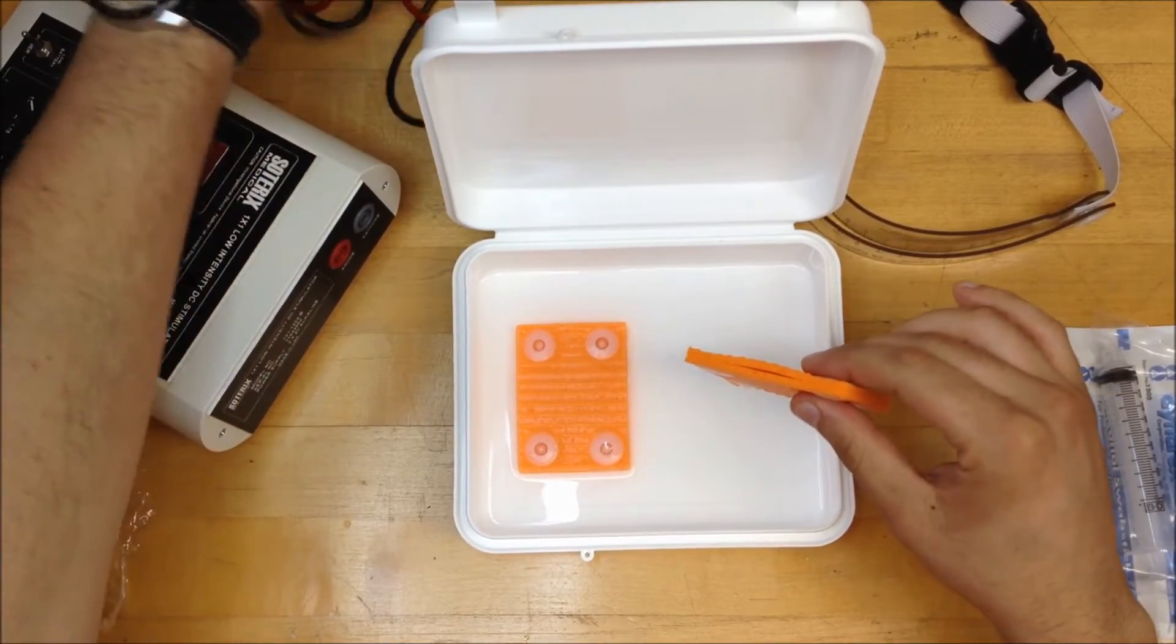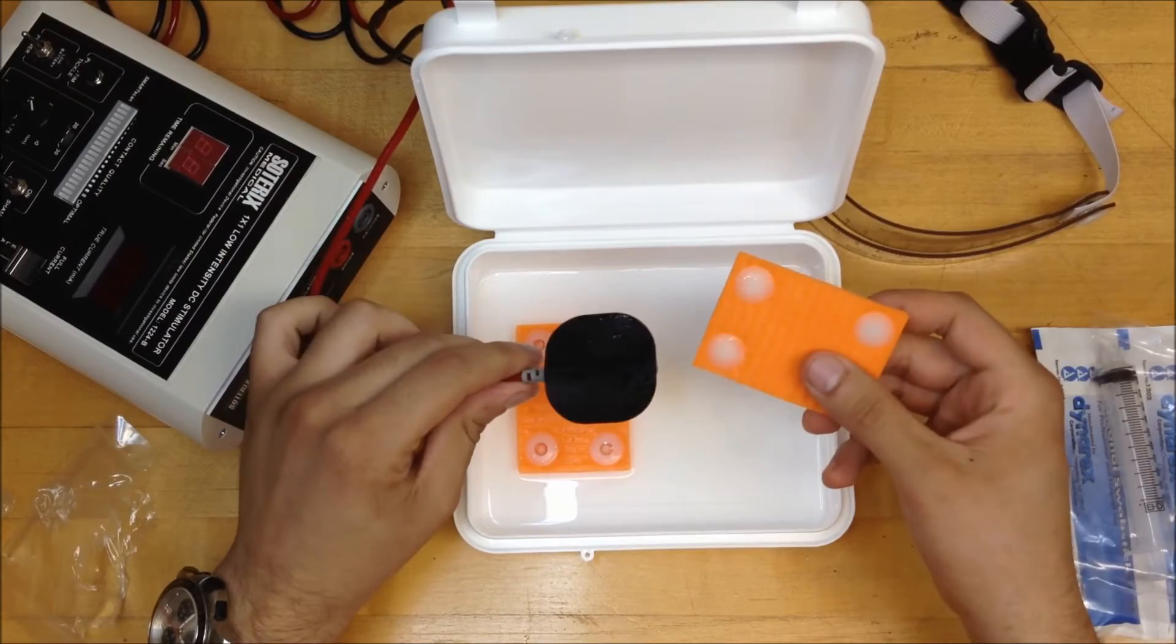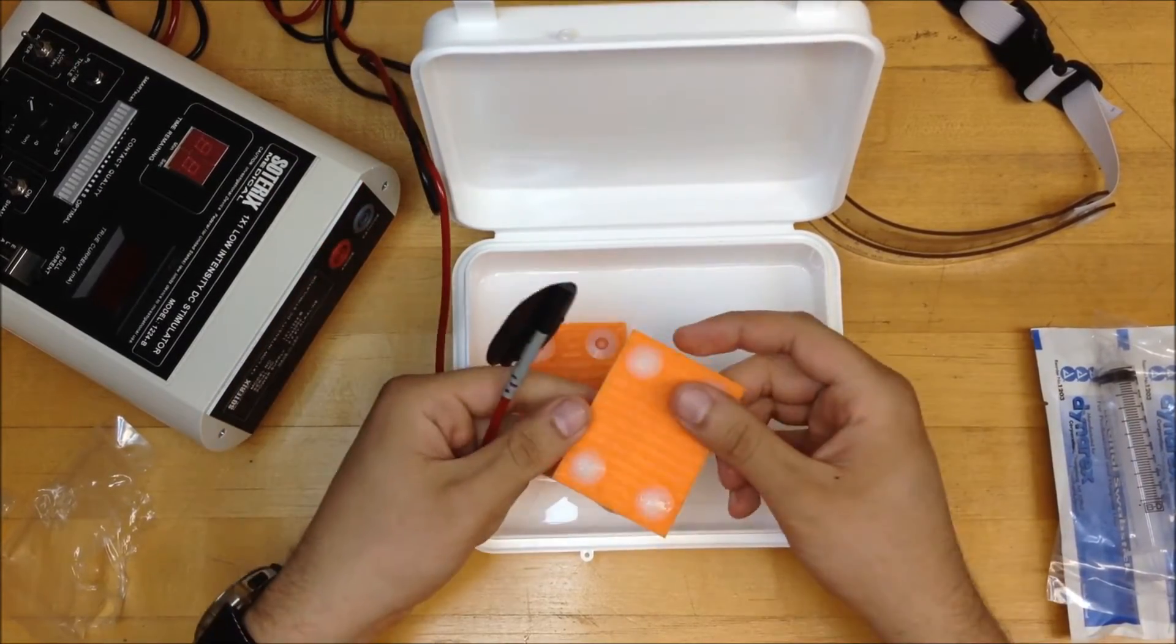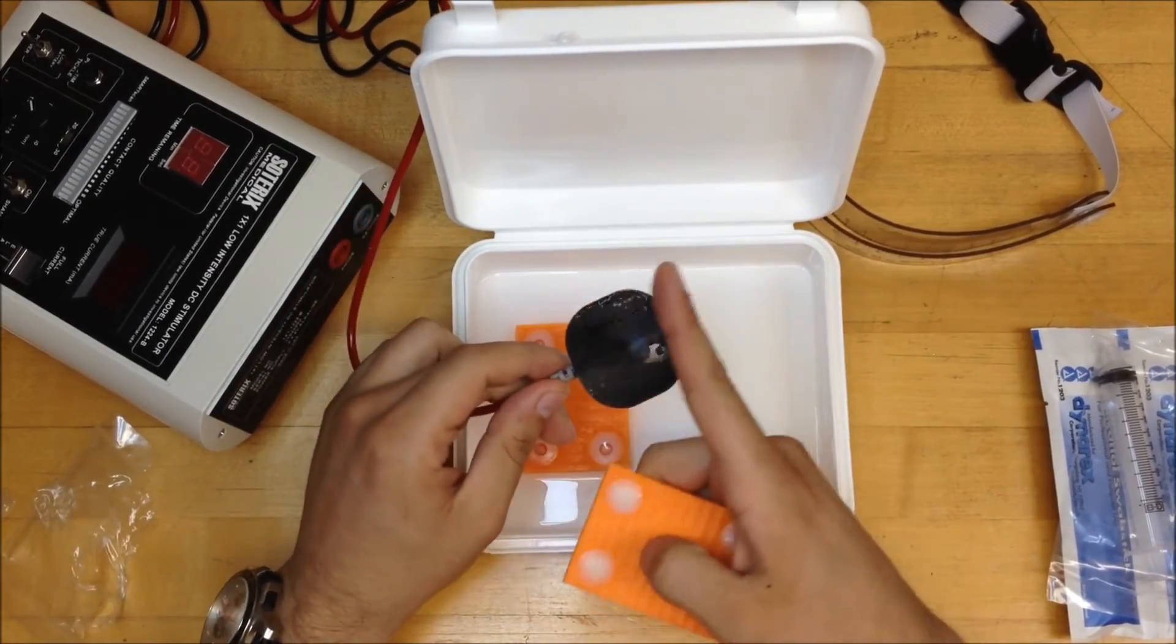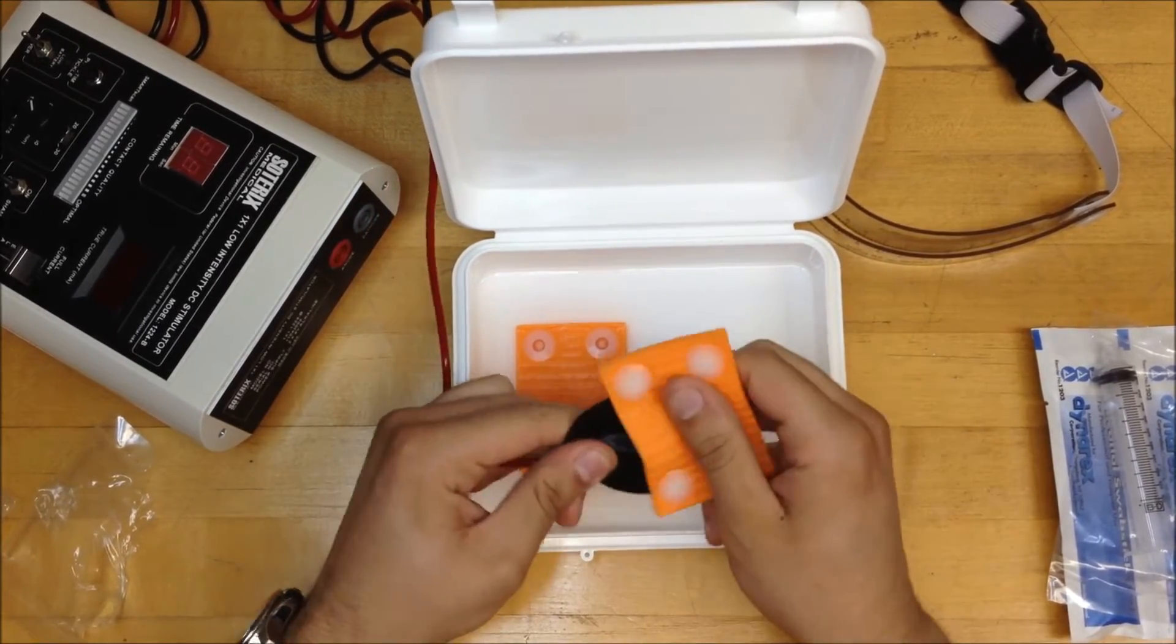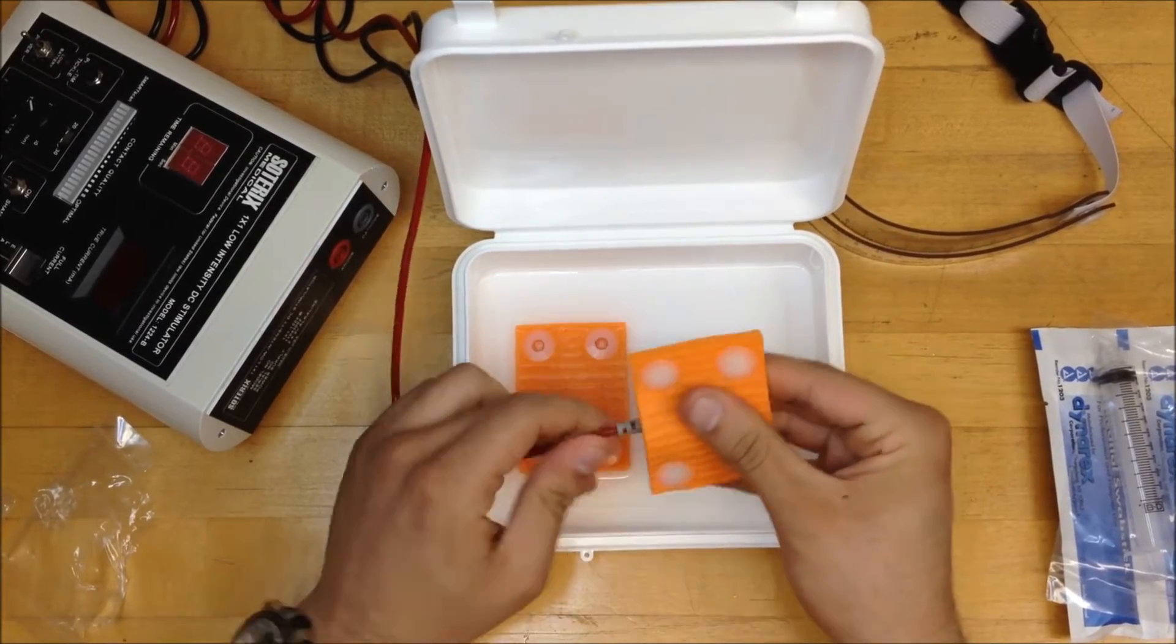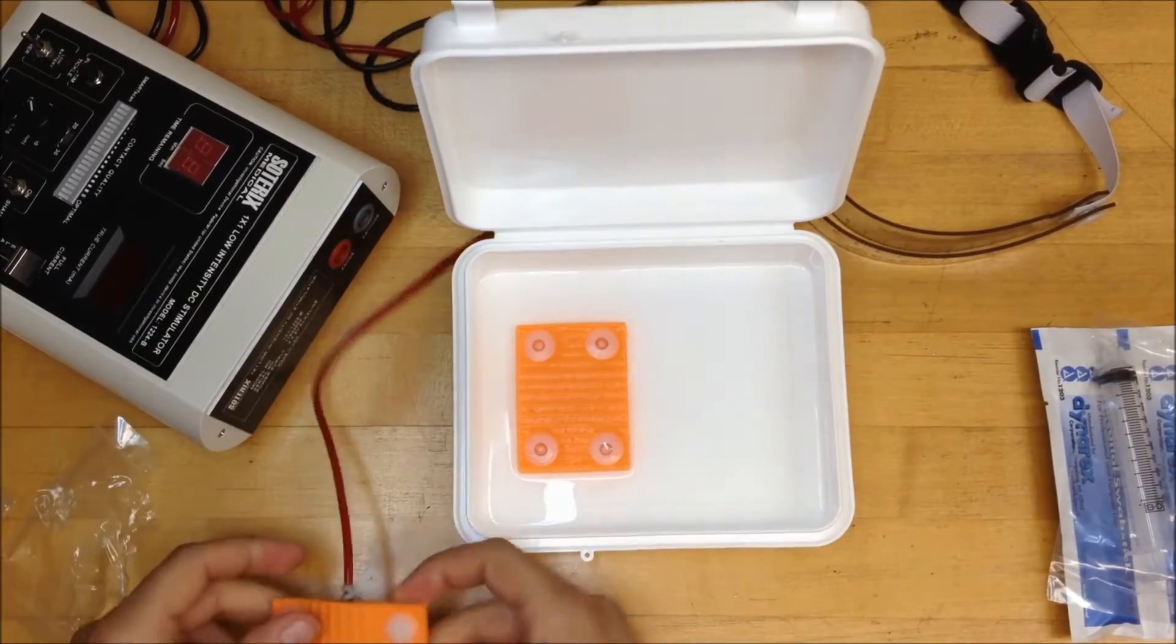Now we take the carbon electrode. And this is where it gets very tricky. You want to have the smooth side of the Easy Pad go with the smooth side of the carbon electrode. So this is the right orientation. It goes in. Now the carbon electrode is fully inside.